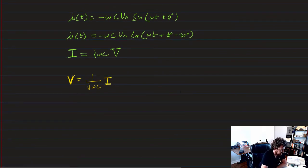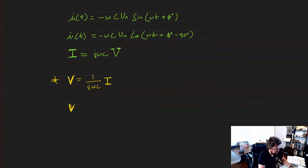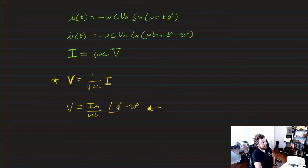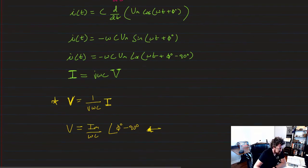Another way to write that is kind of like before we can say that V is equal to I_M over omega C at an angle of 5 degrees minus 90 degrees. So again, I kind of like this. It's going to make the math easier when you work stuff out. But there you go. There is our V I relationship for our capacitor.